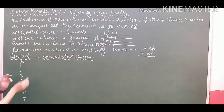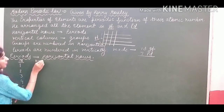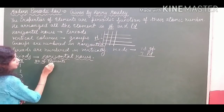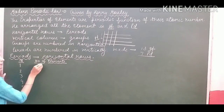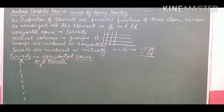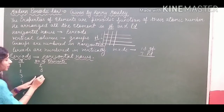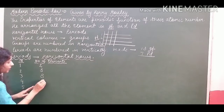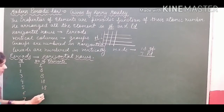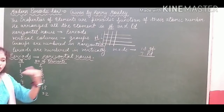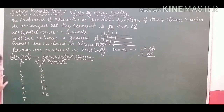The number of elements present in each period: the first period has only 2 elements, as you will see in the modern periodic table. The second period has 8 elements. The third period again has 8. The fourth period has 18. The fifth period has 18. The sixth period has 32. And the seventh period — recently the periodic table has been completed with 118 elements, but at that time this period was incomplete, so 29 elements were there.